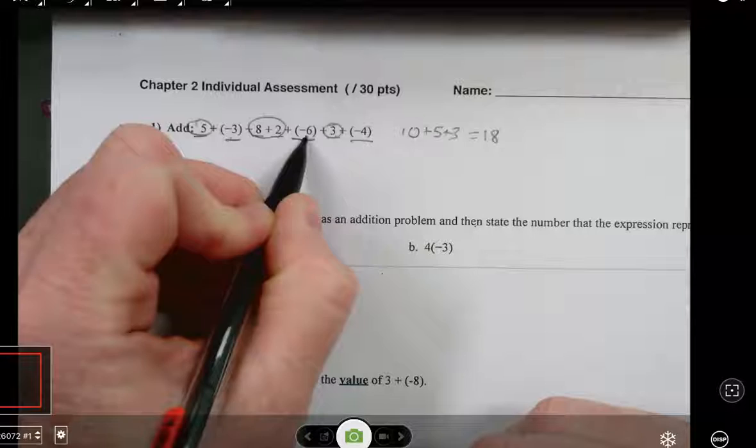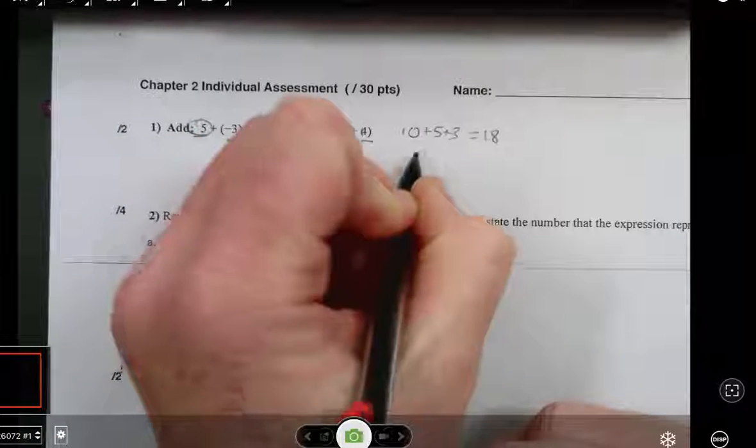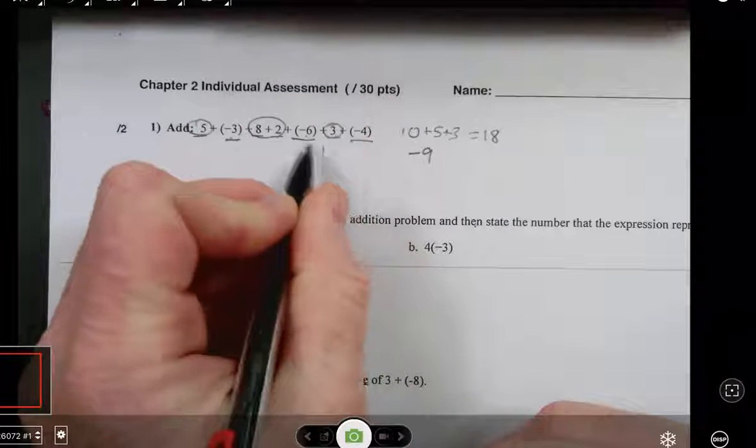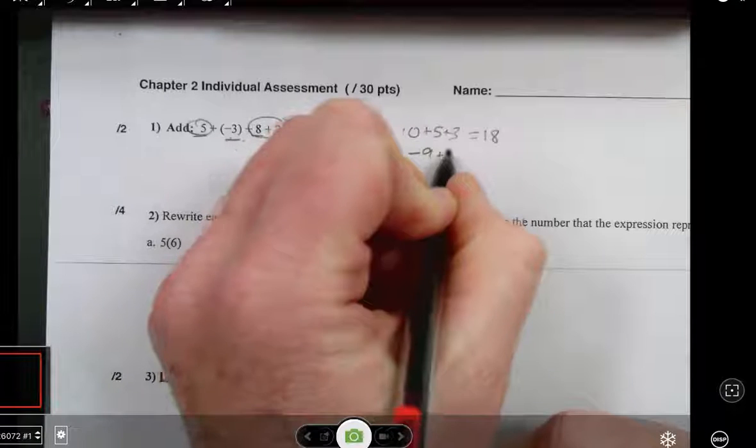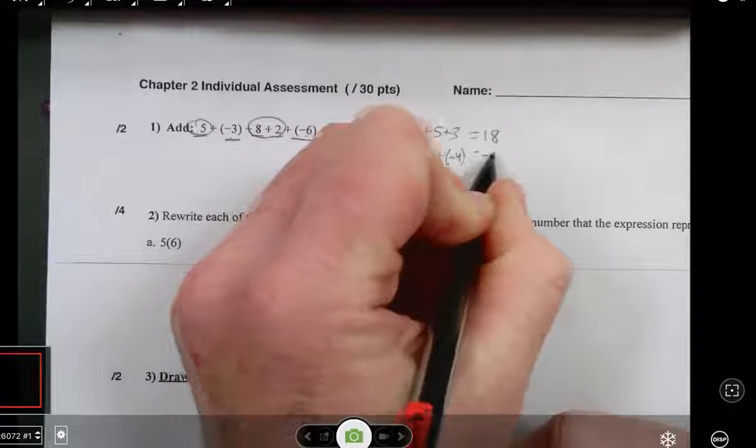Negative 3 and negative 6 is negative 9. And then I need to add the negative 4. And that is negative 13.